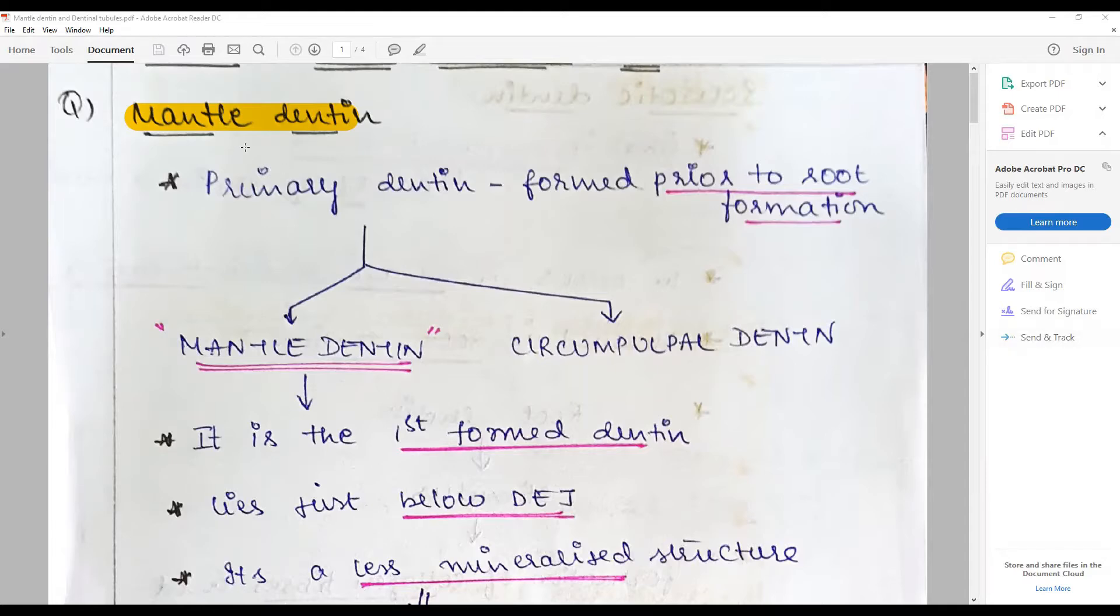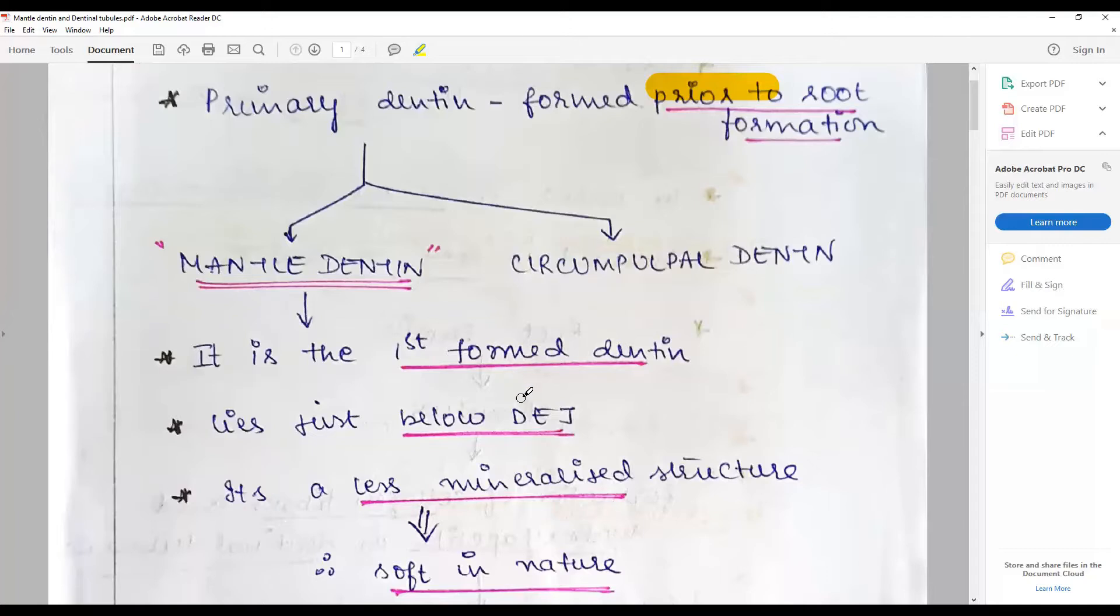Mantle dentine is a part of primary dentine formed prior to root completion. Primary dentine can be classified into mantle dentine or circumpulpal dentine. Mantle dentine is the first formed dentine just immediately below the DEJ.